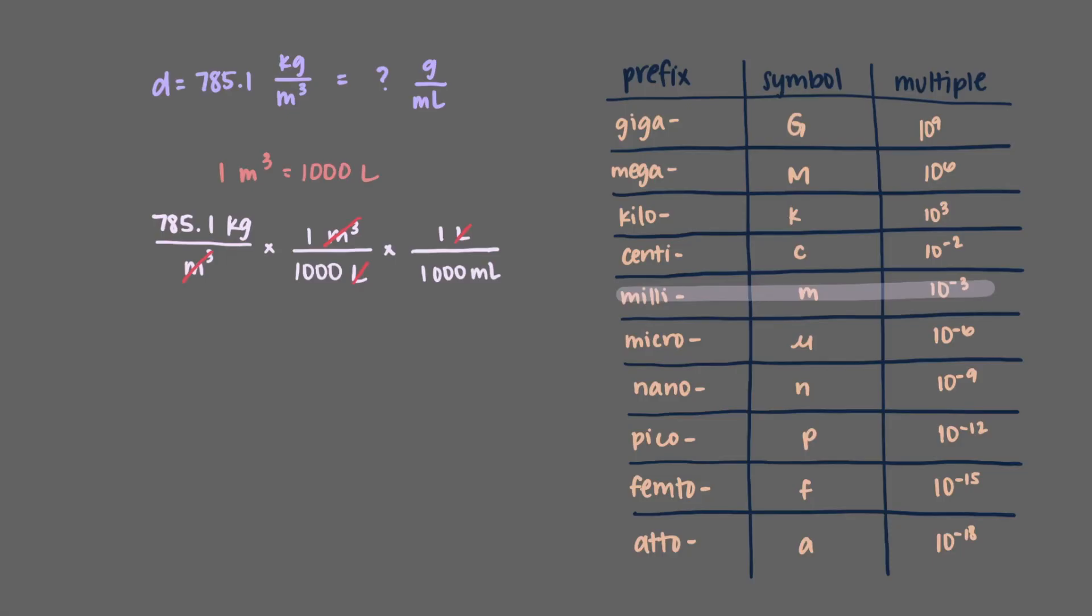However, we still haven't converted the mass from kilograms to grams. From the table, we know that any unit with a kilo prefix means that the multiple is 1,000. This means that, in every kilogram, there are 1,000 grams. Now we can convert the mass from kilograms to grams. These units will cancel out and will be left with grams per milliliter, as was our goal. Although it took a few steps this time, the density of ethanol is still the same. We just expressed it in two different ways.